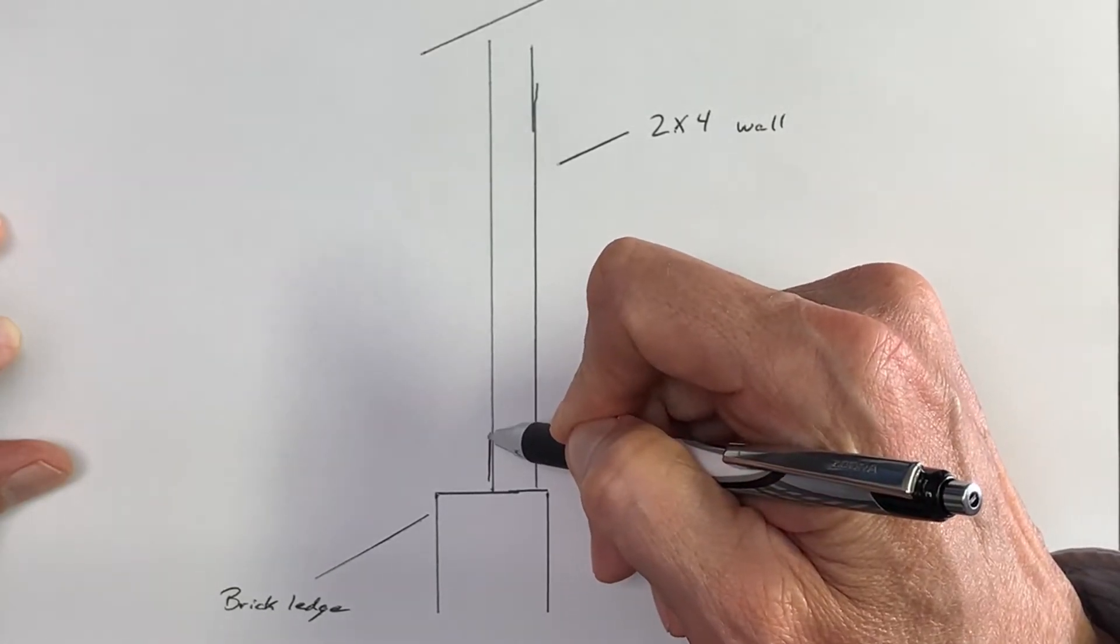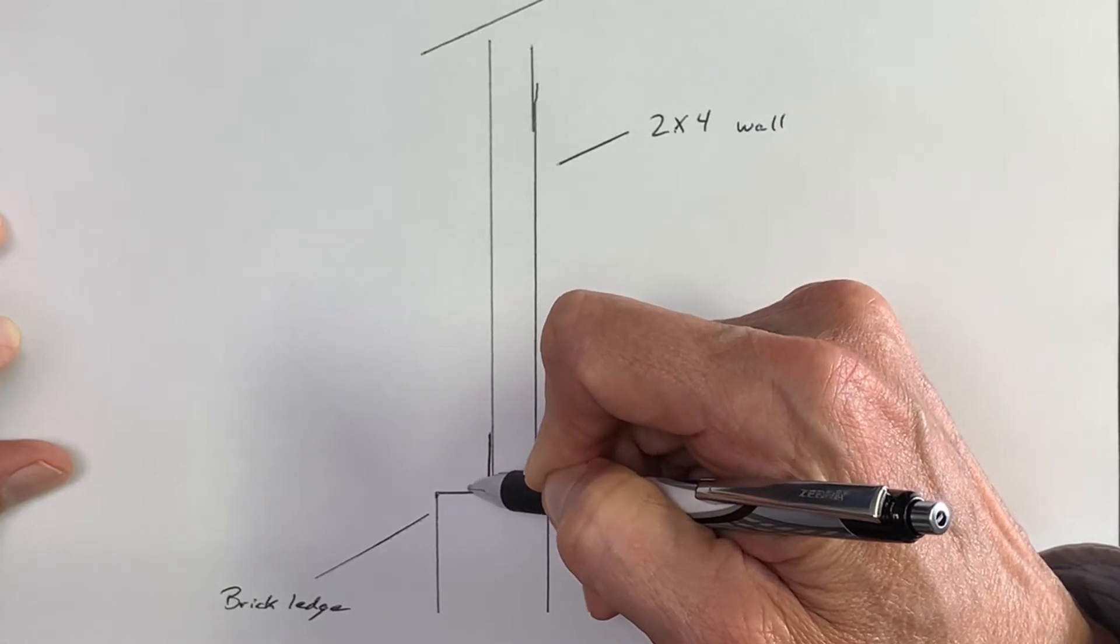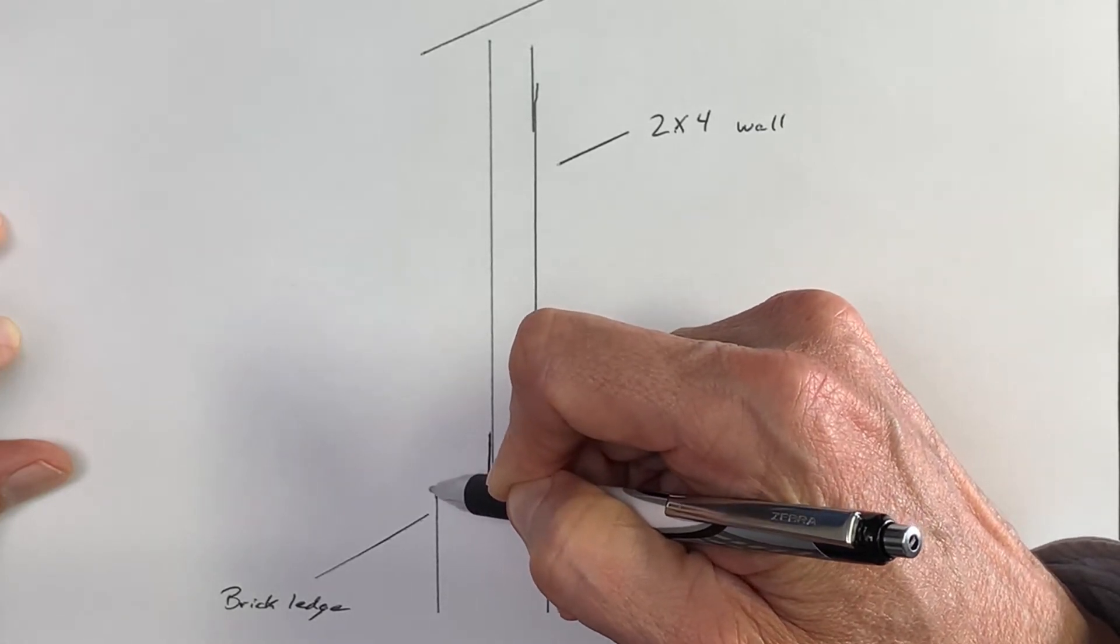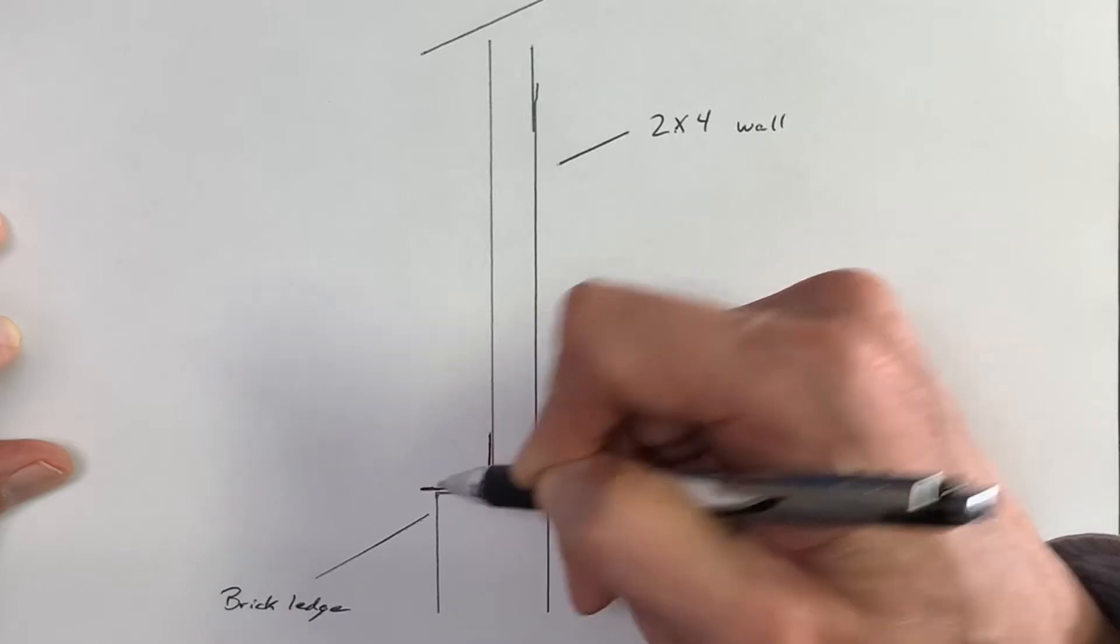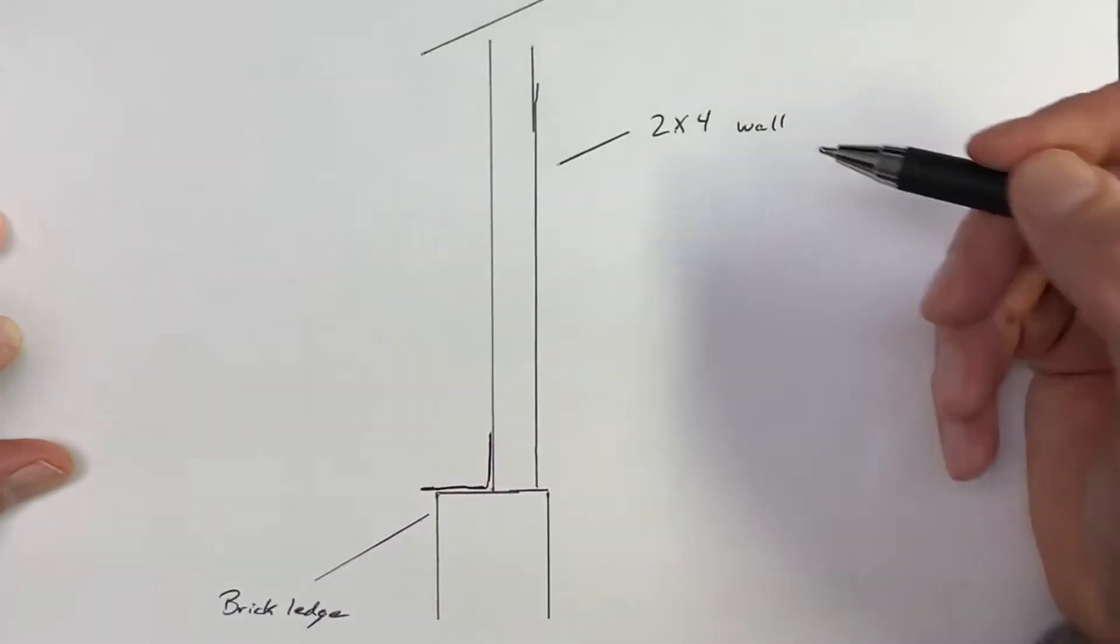So this vinyl barrier starts here, goes down along the brick ledge, and pokes out a little bit over. Code says it has to come out beyond the masonry.